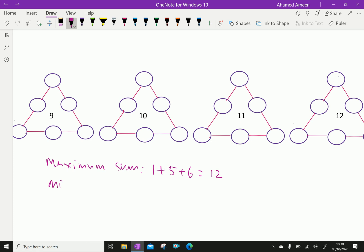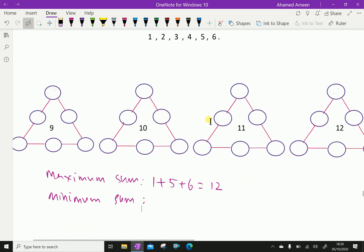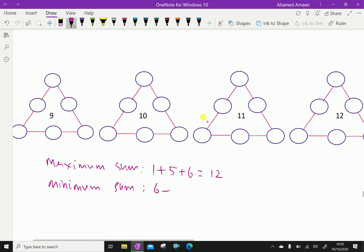The minimum sum is, the last is 6 and first two things are 1 plus 2. So we are getting minimum sum is 9. And maximum sum is 12.